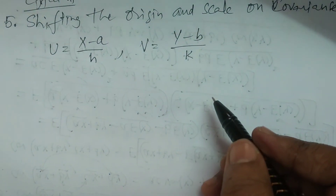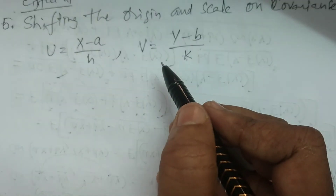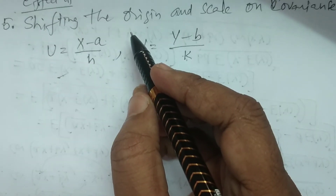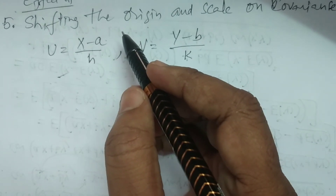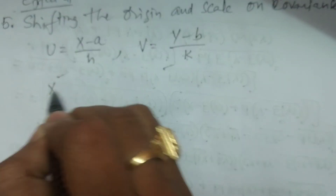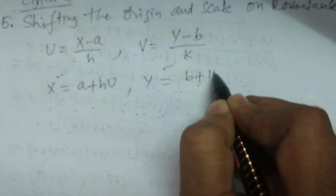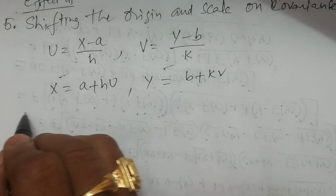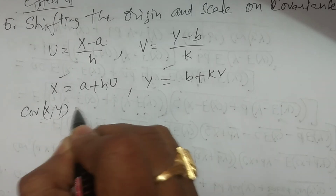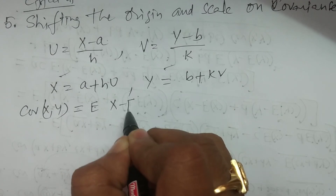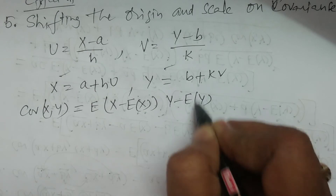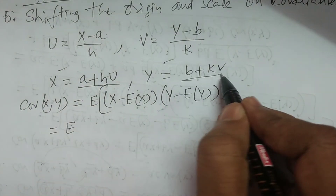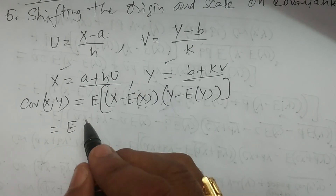Since there are two variables in covariance of x, y, we consider two substitutions u and v. In the one-variable case for variance, only u was needed. Here, x = a plus hu and y = b plus kv. We calculate covariance of x, y by substituting these expressions.